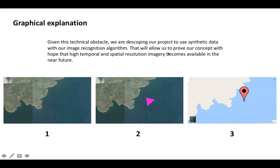We want to show this concept in three frames here, so you guys have a better idea of what we're talking about. Here on the left, we have a frame of a portion of Lake Volta as it looks normally. In the second frame, we have inserted, to test our algorithm, an image of a boat that looks oddly triangular and very pink.